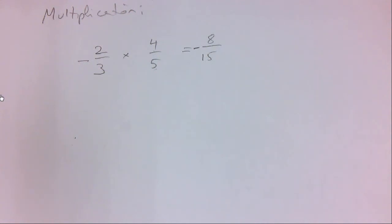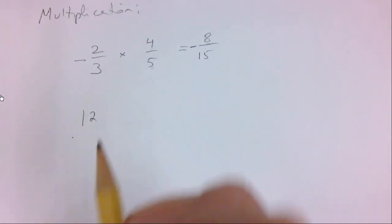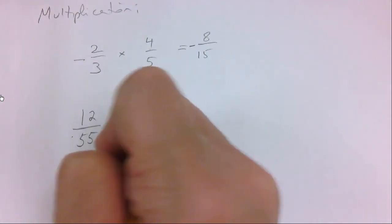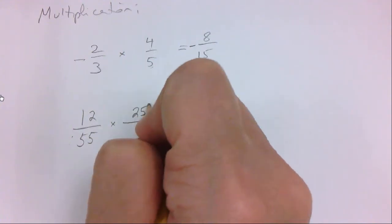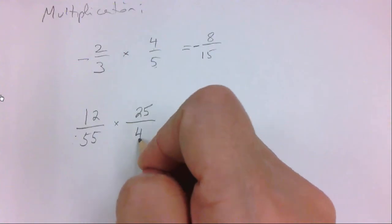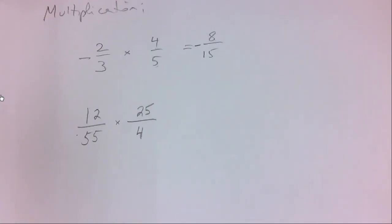A really important thing that we're going to be working with a lot is canceling when you're multiplying. What this means is this. If I gave you to multiply 12 over 55 times 25 over 4, imagine I gave you to do this with no calculator. If you were to multiply these ones out, 12 times 25, you're going to get a big number, 300. And if you multiply down below here, you're going to get another big number, 220. And now you'll be stuck with having to reduce the fraction, 300 over 220, because it can be reduced. So we're going to do it two ways.